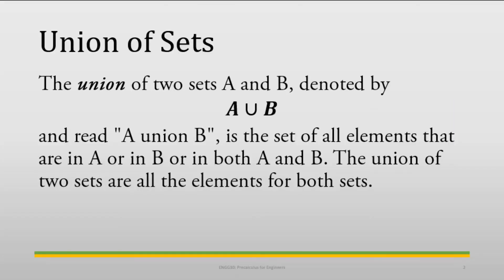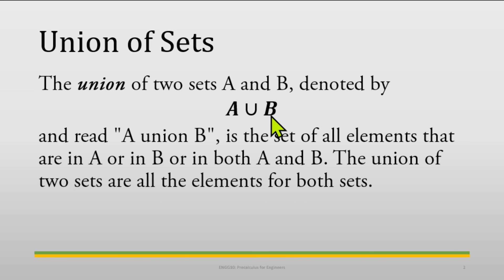The union of sets — say we have two sets A and B — is denoted by the symbol like this one. This is read as A union B. The union of two sets A and B is the set of all elements that are in A, or in B, or in both A and B. The union of two sets combines the elements from both sets.